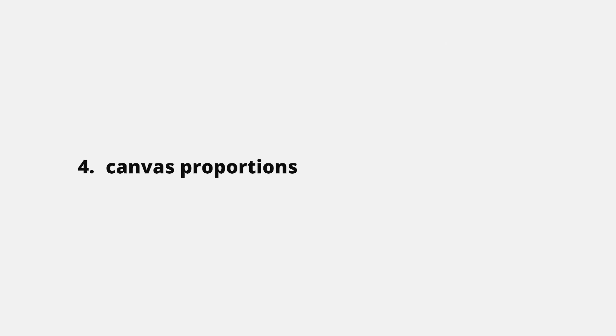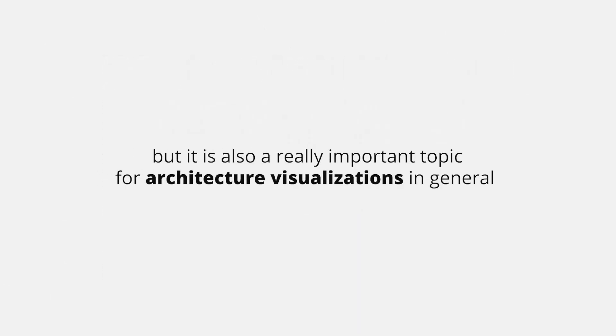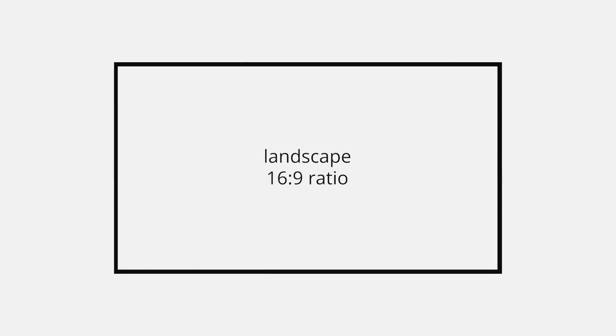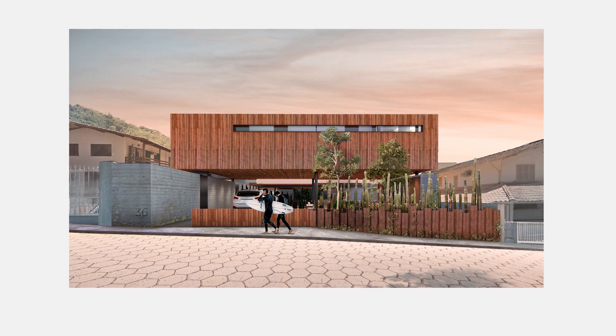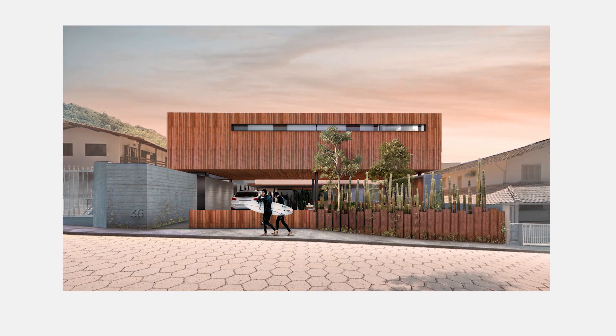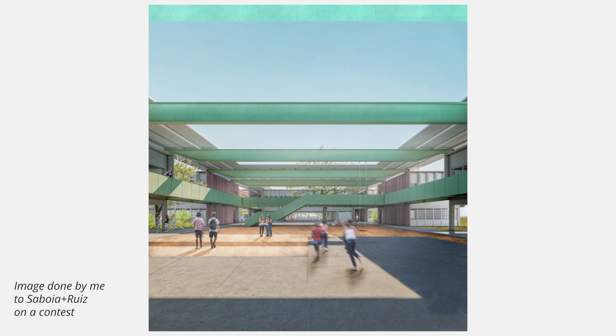The fourth item is canvas proportion. We are tied to usually creating images on a landscape 16:9 ratio — it is our standard monitor proportion, so in order to maximize screen space, we tend to use it. I even remember when I was an intern at a pretty big office where all renders were done in 16x9, no exception, so that they could fit in a PowerPoint to be presented on a TV to the client. That makes sense, but oftentimes with exterior scenes especially, they get very cramped. The sky plays a major role in the composition — it lets the focus of the image breathe and balances out the canvas.